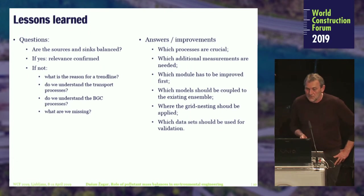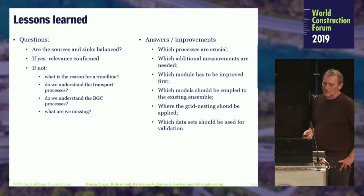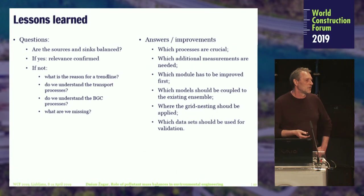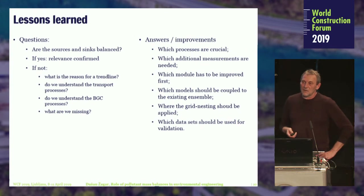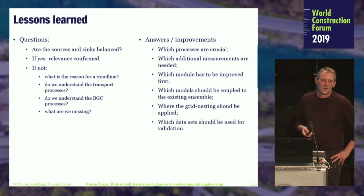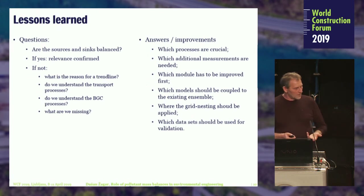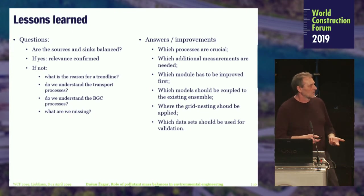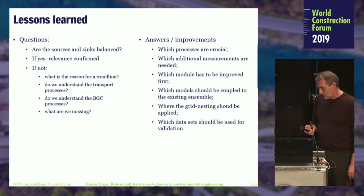Which of these processes are crucial? Which additional measurements do we need? For the modelers, this one is very important: which part of the model needs to be improved first? What is the priority of the improvements? Which other models should be coupled to the existing ensemble? Sometimes we are only using one model in the water compartment — is this okay? Do we need to apply a model for the atmosphere and calculate the exchange with coupled models? Or sediment models? Or whatever we need.